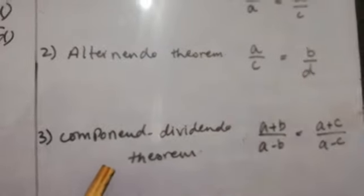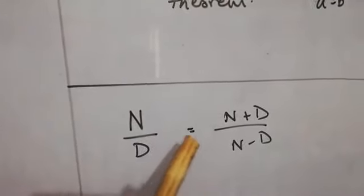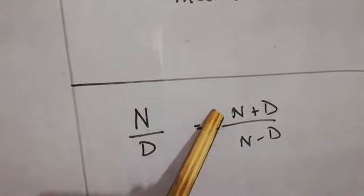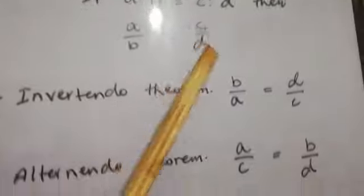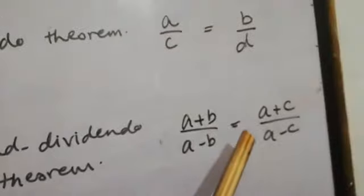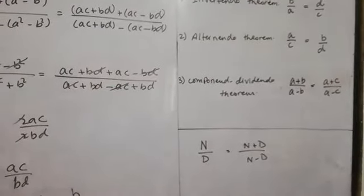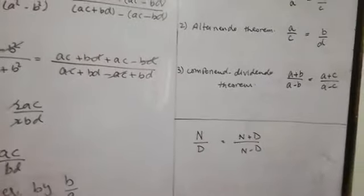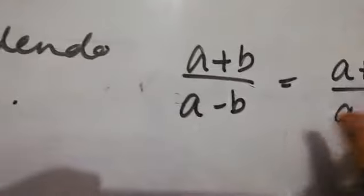The third, which is very important, is the Componendo Dividendo theorem. In this theorem, if we have a fraction with numerator and denominator, we will first add the numerator and denominator in the new numerator, and subtract these two values in the new denominator. So in the form of A by B and C by D, we will write A plus B by A minus B, and C plus D by C minus D.